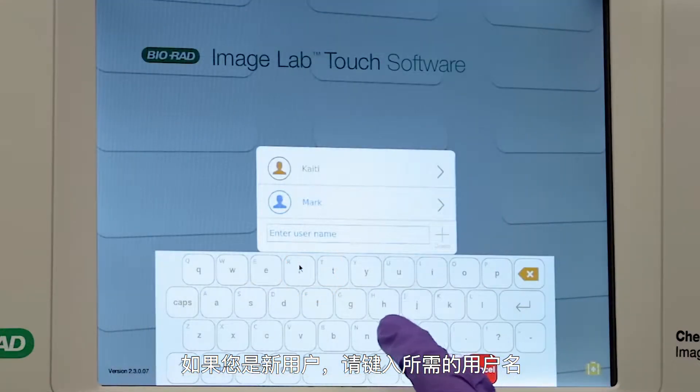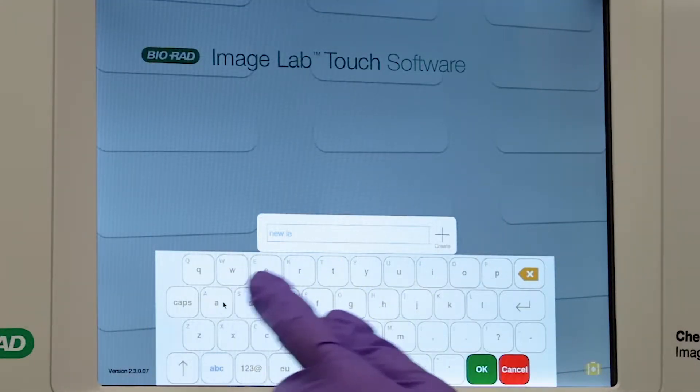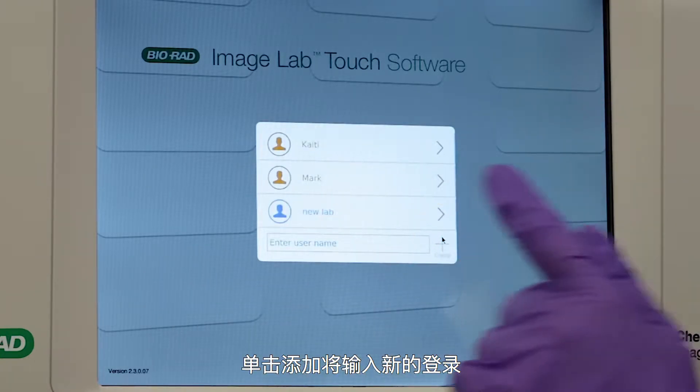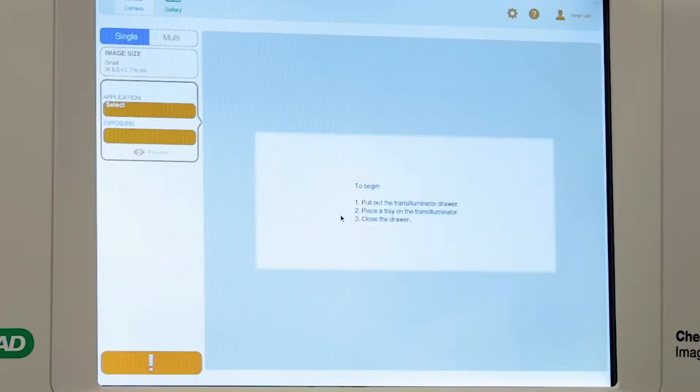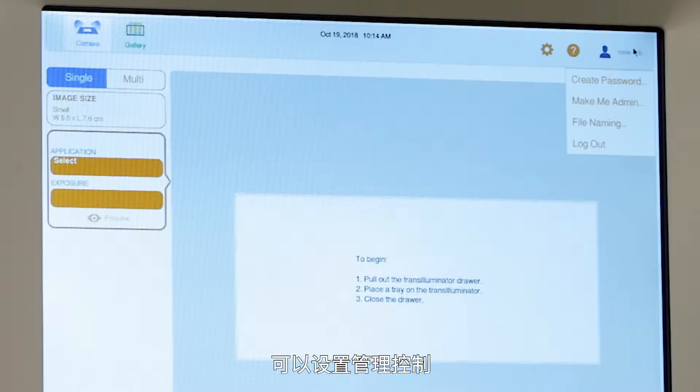If you're a new user, type the desired username, click the plus sign, and the new login will be entered. Administrative controls can be set by clicking the person icon in the top right-hand corner.